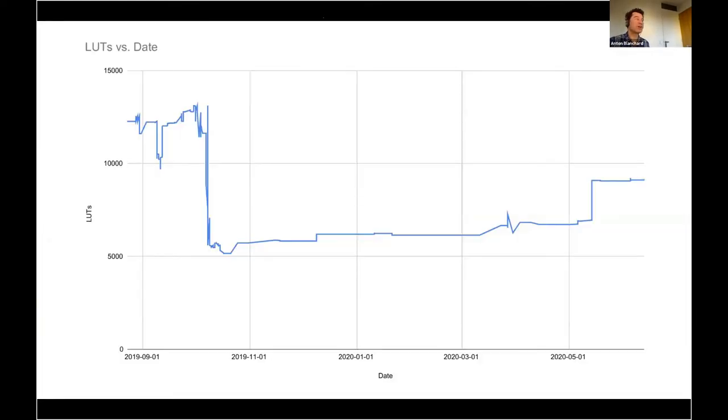Our resource consumption over time. So these are LUTs, lookup tables. It's kind of a measure of resource utilization for an FPGA. The idea is the more LUTs you consume, the more resources you consume, and potentially the bigger FPGAs, more expensive FPGAs you might need. It also results in slower build times as well.